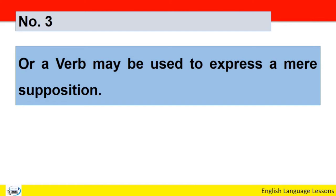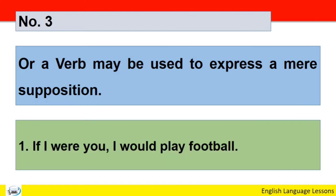Number three: Or a verb may be used to express a mere supposition. Ya mehaz ek mafroze ke express karne ke liye bhi hum verb ko use kar sakte hain. For example: If I were you, I would play football. Is sentence mein supposition dikhai gayi hai aur verb ne supposition ka role play kiya hai.